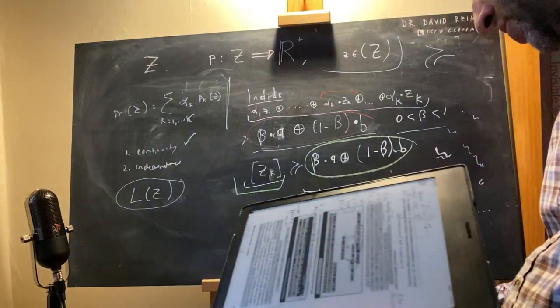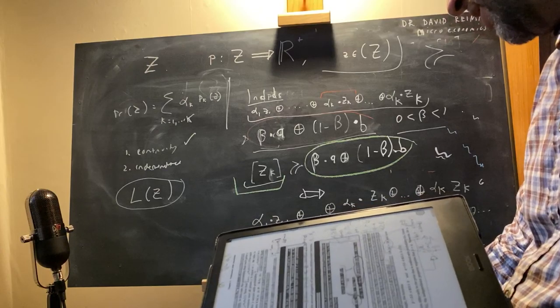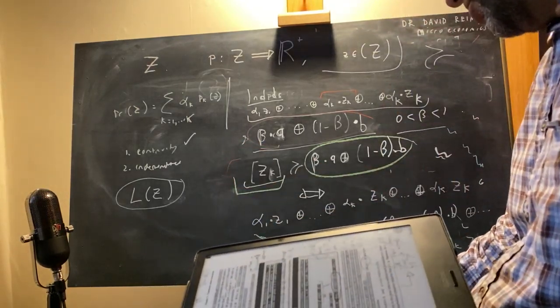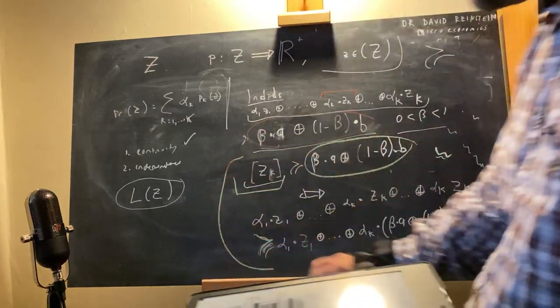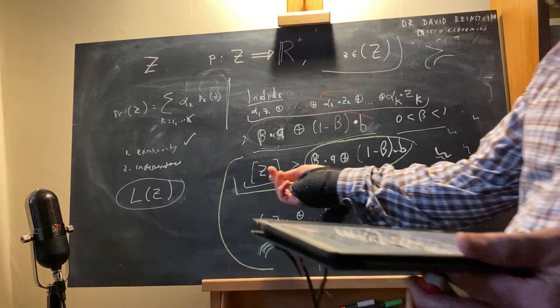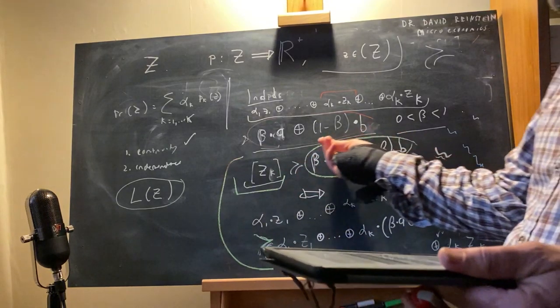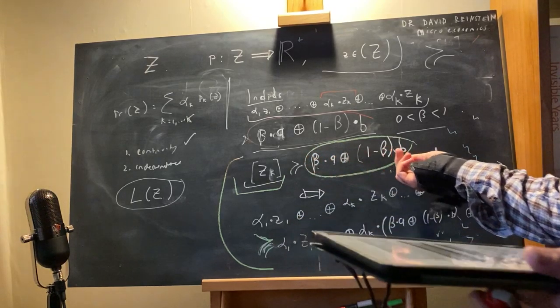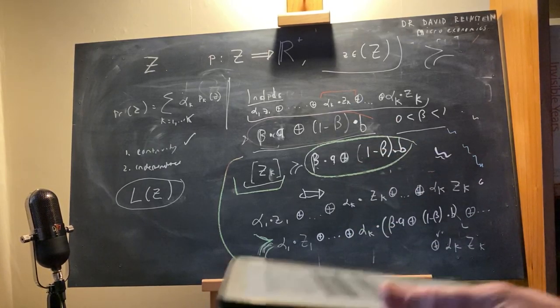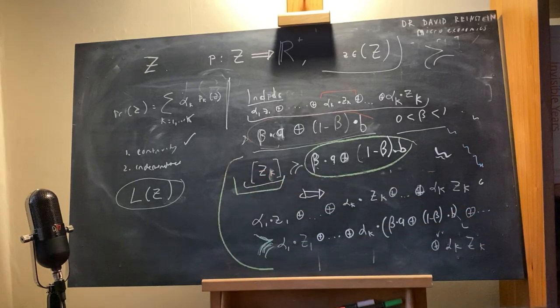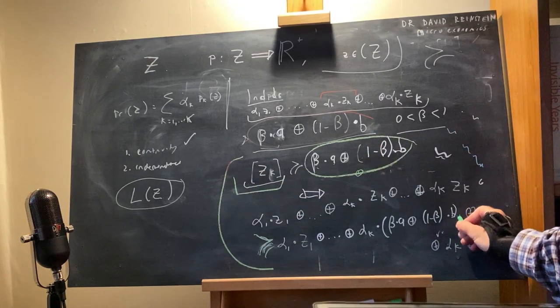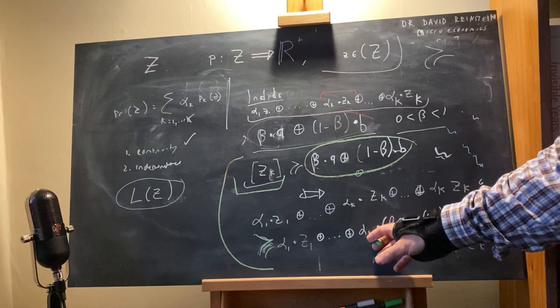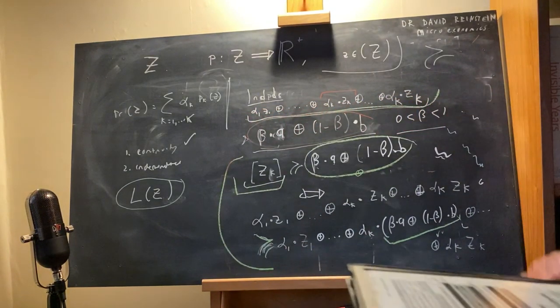Now independence is succinctly, well, somewhat succinctly and precisely defined as the following if-then statement, which actually goes in both directions, if and only if. If we have some certain outcome Zed K that's weakly preferred to some lottery, beta probability of A and 1 minus beta probability of B, then if I swap in this lottery for some element of the original lottery.